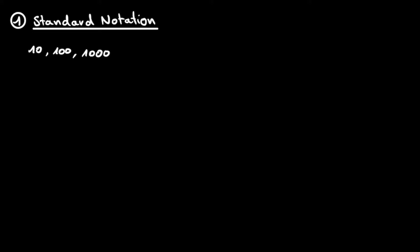This first brings us to the standard notation, the one that we generally use to write ordinary numbers. We have 10, 100, 1000, and when there are too many zeros, we separate them in triplets. However, we see that we quickly run into a wall here. If we have such large numbers that the number of zeros becomes very large, then we find ourselves copying zeros all the time and these numbers become very unreadable.